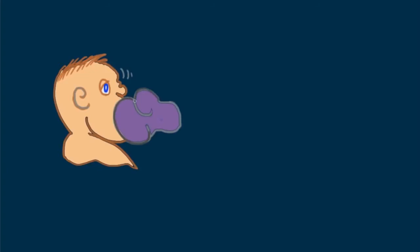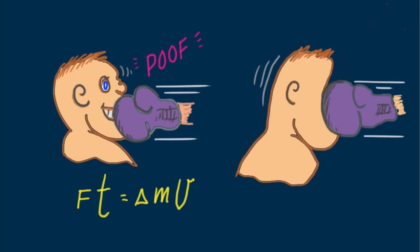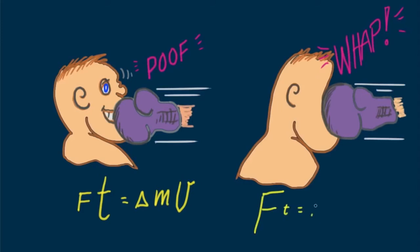In boxing, consider the momentum of an incoming punch. When the boxer moves away from the punch, he extends the time of contact and diminishes the force — big T means small F. When he moves into the glove, the time is reduced and he must withstand a greater force — small t means big F.